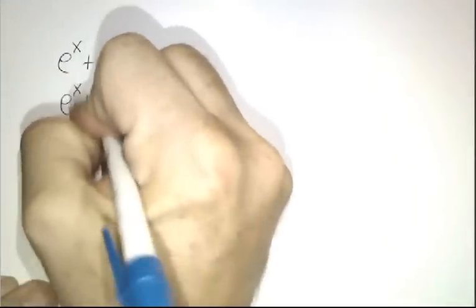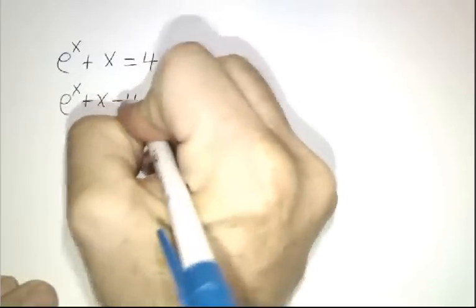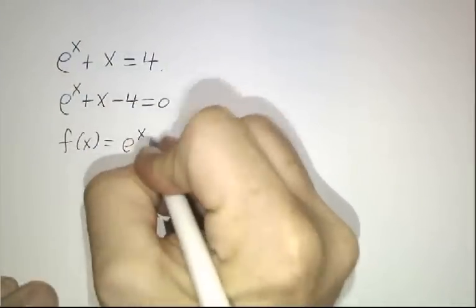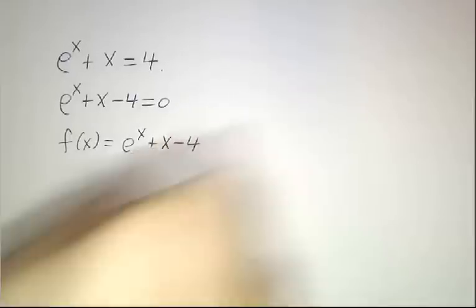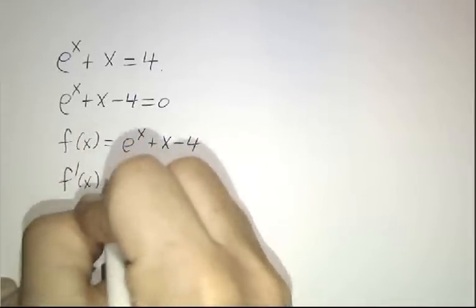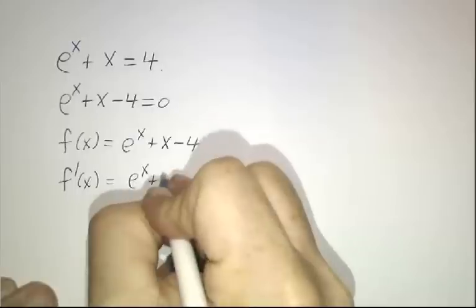So what we're really trying to do is we're trying to solve e to the x plus x minus 4 equals 0. So our function is f of x is e to the x plus x minus 4. And the derivative of that function is e to the x plus 1.